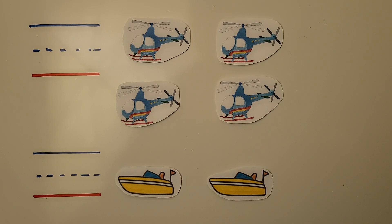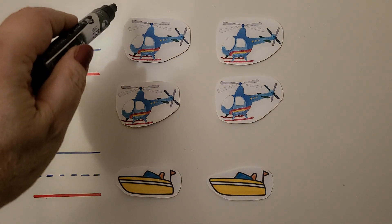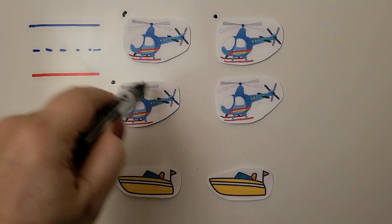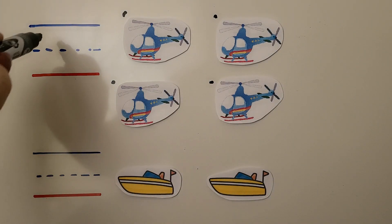We can mark the objects as we count them, that way we won't accidentally count them again. Here we have 1, 2, 3, 4. We can write the number 4.